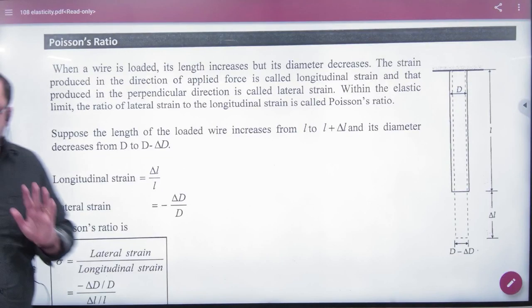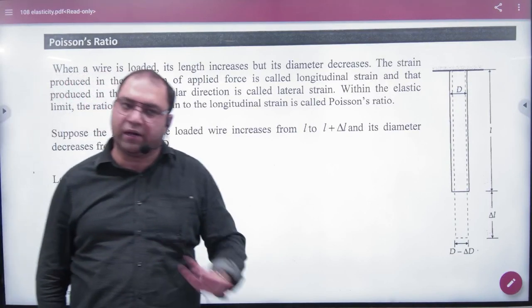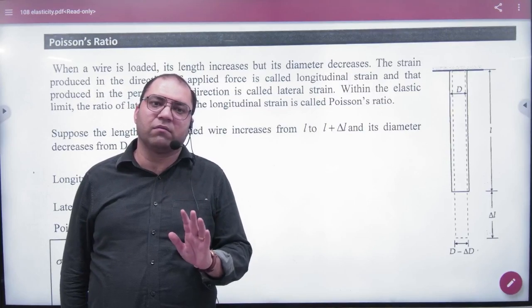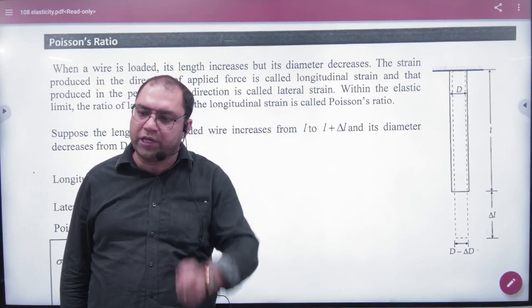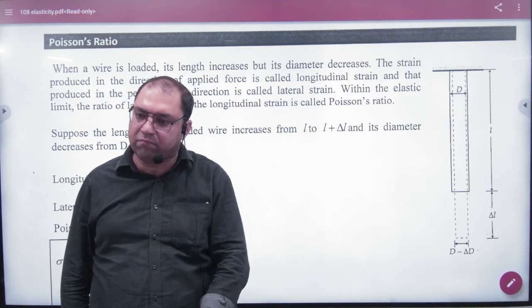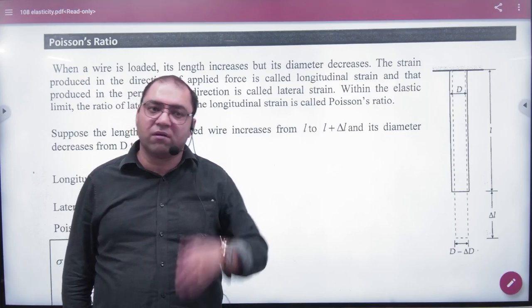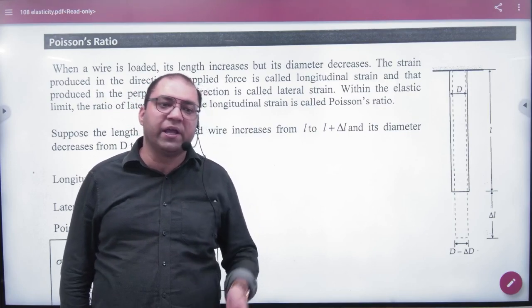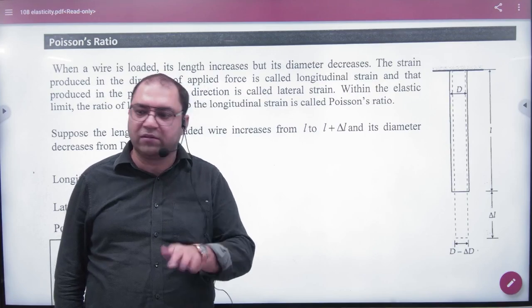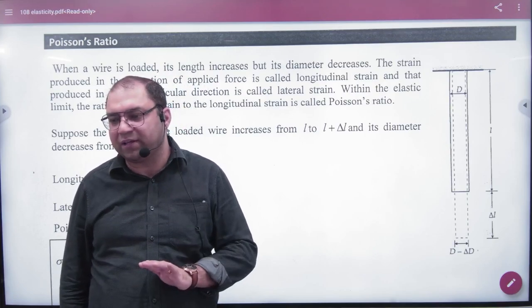So what is the Poisson's ratio? We have made the whole elasticity. We have told each question that we will increase the wire, expand, increase the length. When we increase the length, we have assumed that the area remains the same. But practically, it doesn't happen.